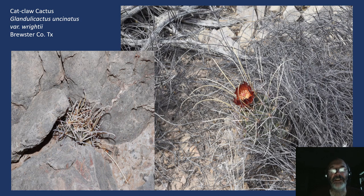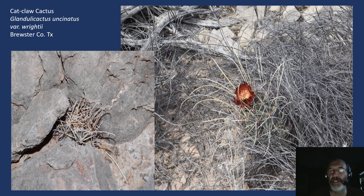And then Glandulicactus uncinatus, the catclaw cactus. The one on the left is about the size of a quarter; the one on the right is about four inches in height and in bloom — also a relatively early bloomer. With the spination, they blend into the grasses very nicely and can often be hard to find in a good grassy region. But they're a great little cactus, one of my favorites.